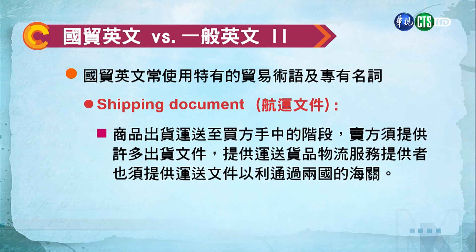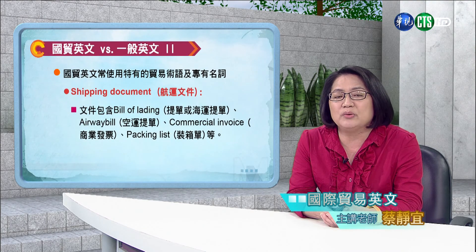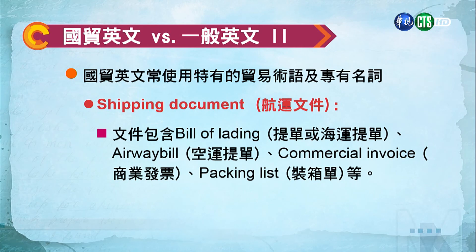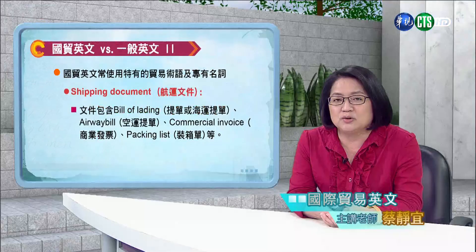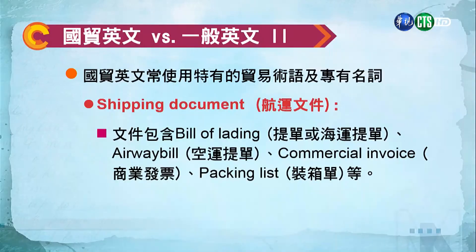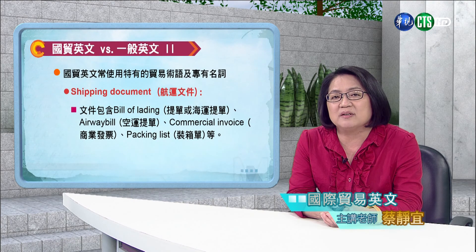另外，商品出貨運送到買方手中的階段，賣方必須提供很多出貨文件，貨運物流服務提供者也必須提供運送文件以利通關。這些文件包含Bill of Lading（提單）、Airway Bill（空運提單），以及通關必要的Commercial Invoice（商業發票，要告訴海關裡面的東西是什麼、價格是多少），以及Packing List（裝箱單）等。這些shipping documents都是從事國際貿易才會有的東西，這就是與一般英文的差異所在。